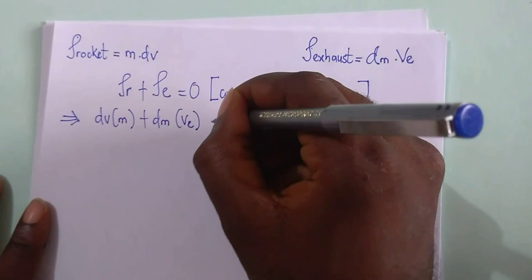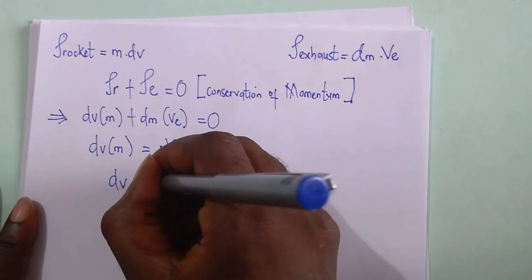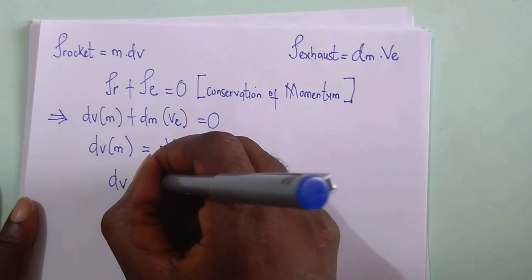Now, substituting for each values, we make dv the subject of formula, which is dv equals to minus ve dm over m.